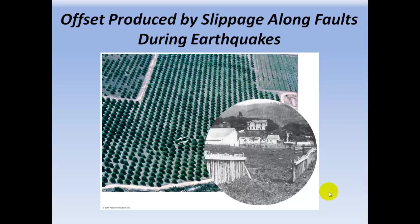Here, there had been an earthquake in this farm, and these trees had originally been planted in nice neat rows. There's a fault that goes through here, and the displacement was in this direction and this direction, so now the trees have a zigzag in their rows. Here's where a fence was cut across by a fault line, so the movement was in this direction and this direction.